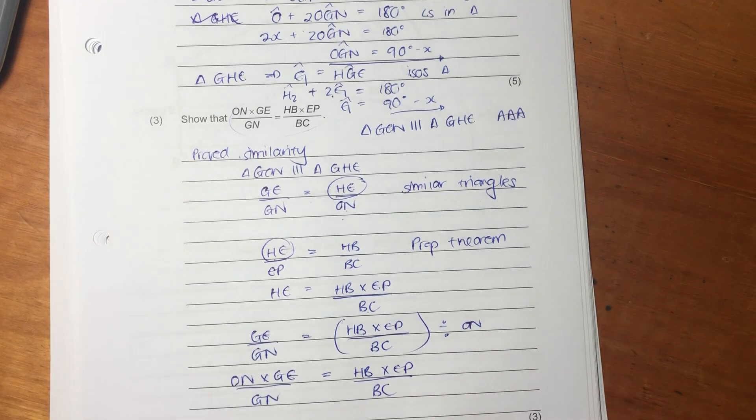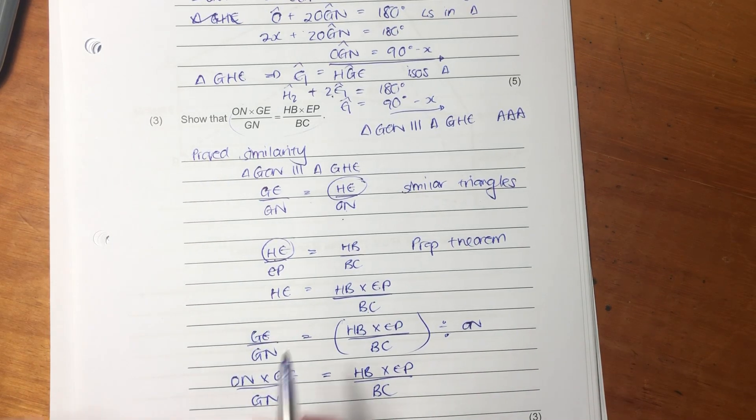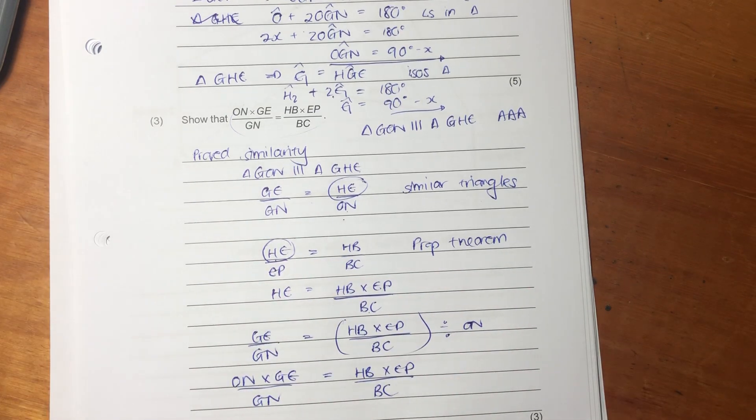Then I said, what else can we see from the diagram? And then I said, proportionality. And then I wrote out the proportionality in its basic form. Then I just manipulated it algebraically, and I got to the answer.